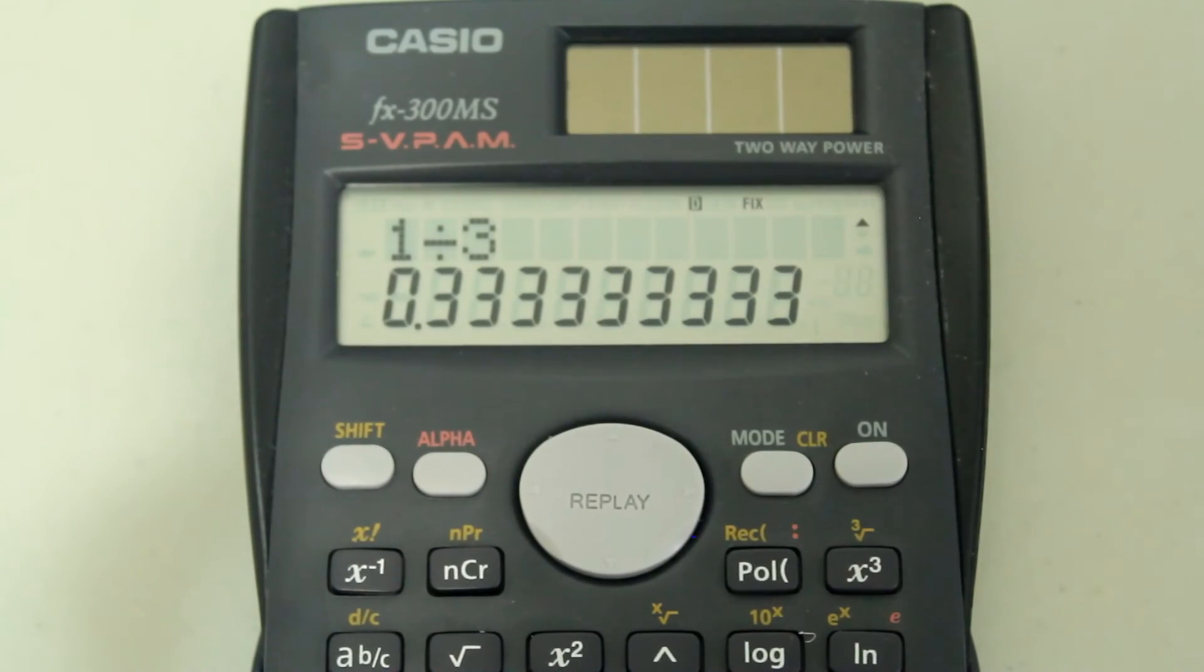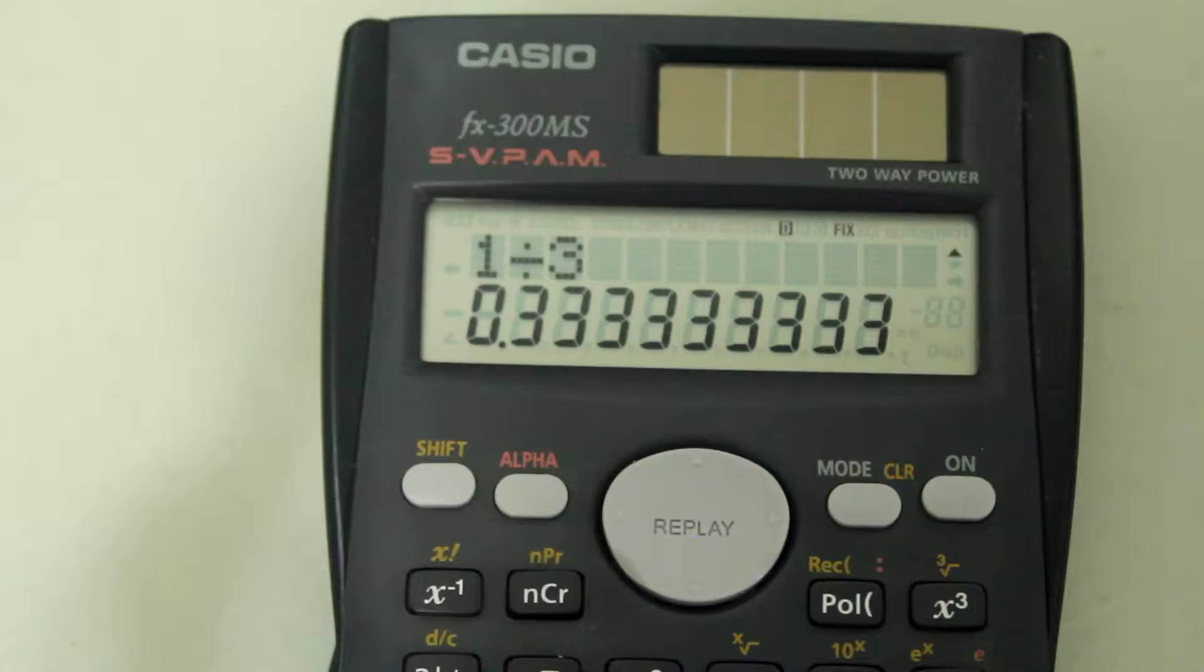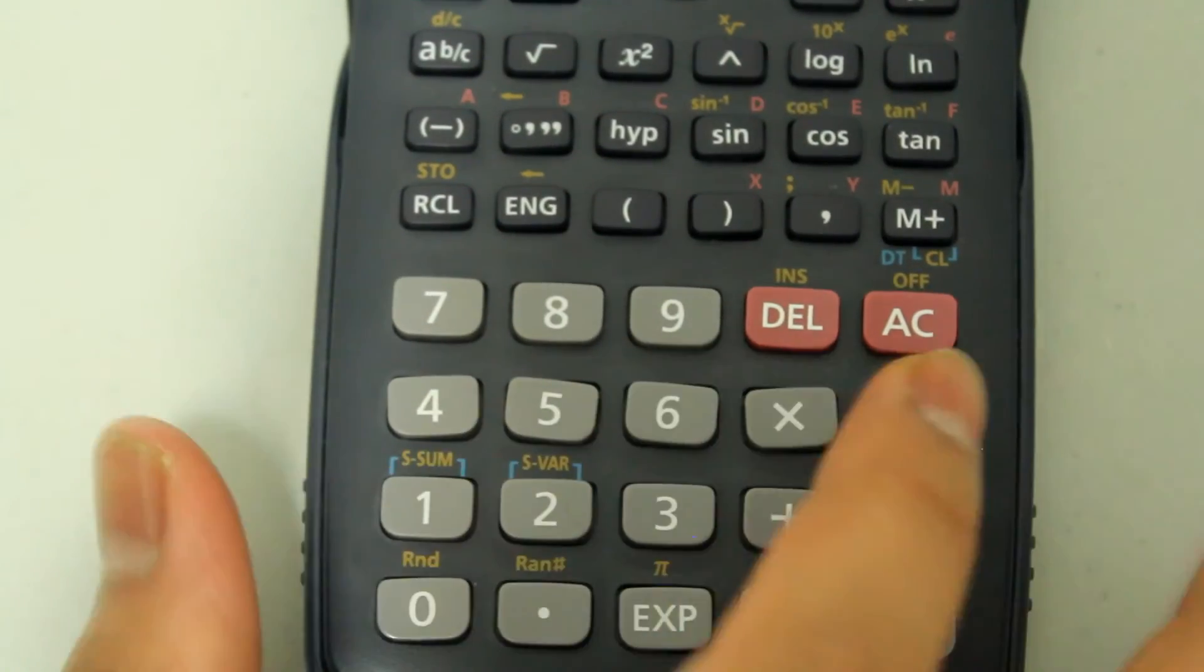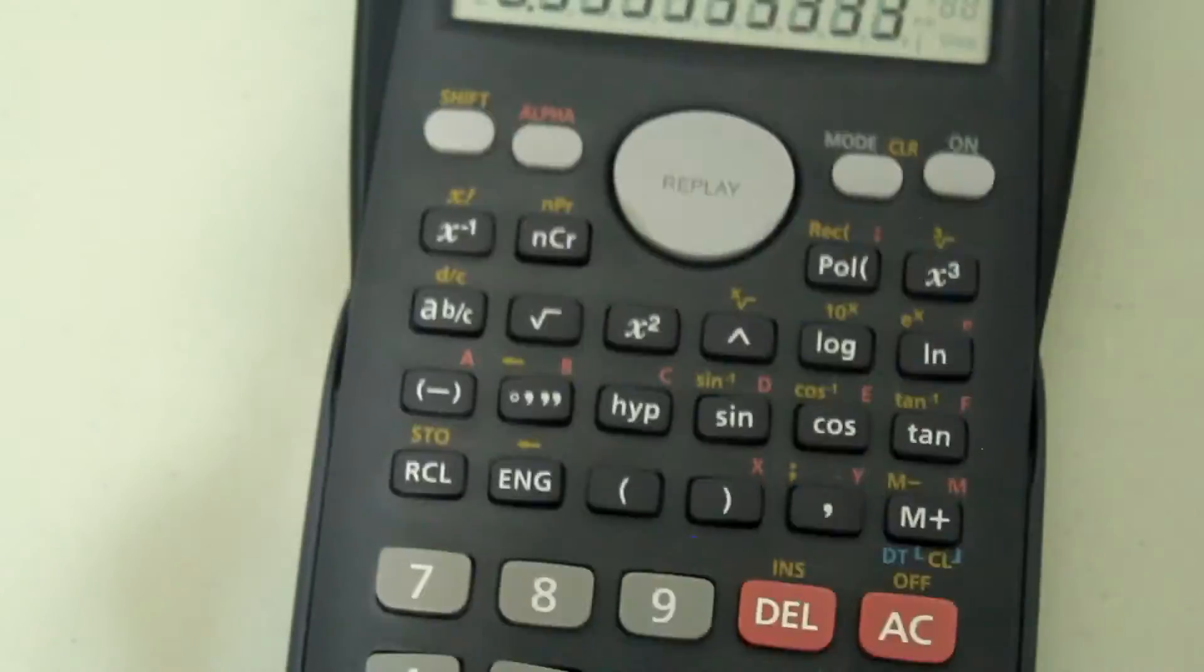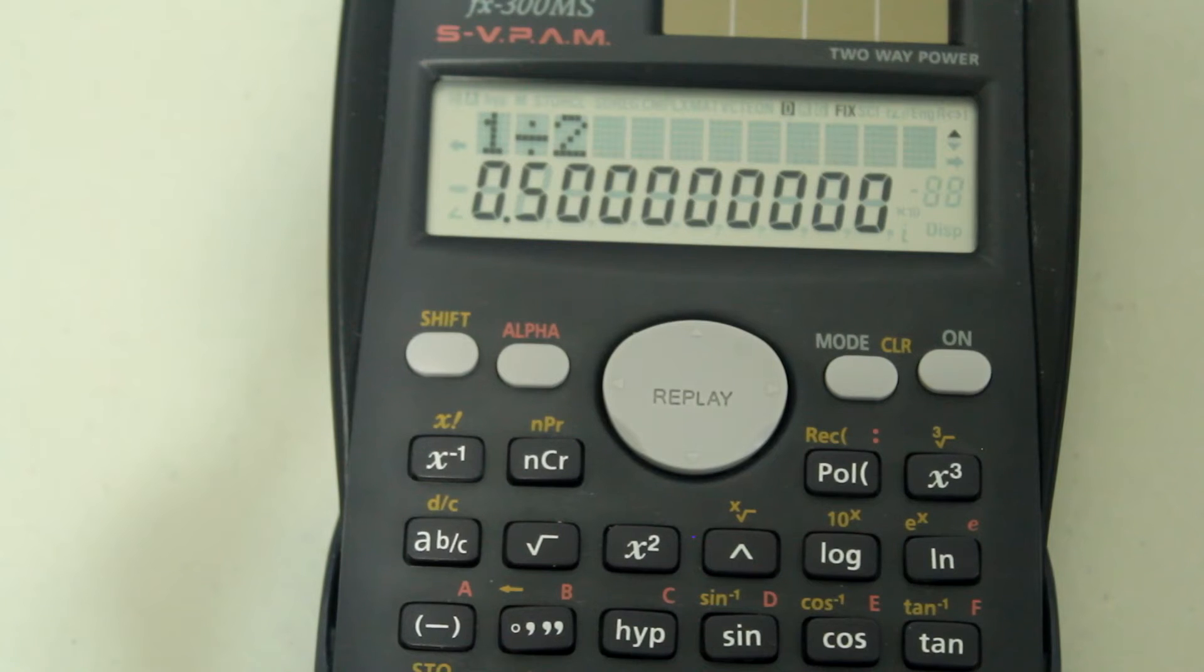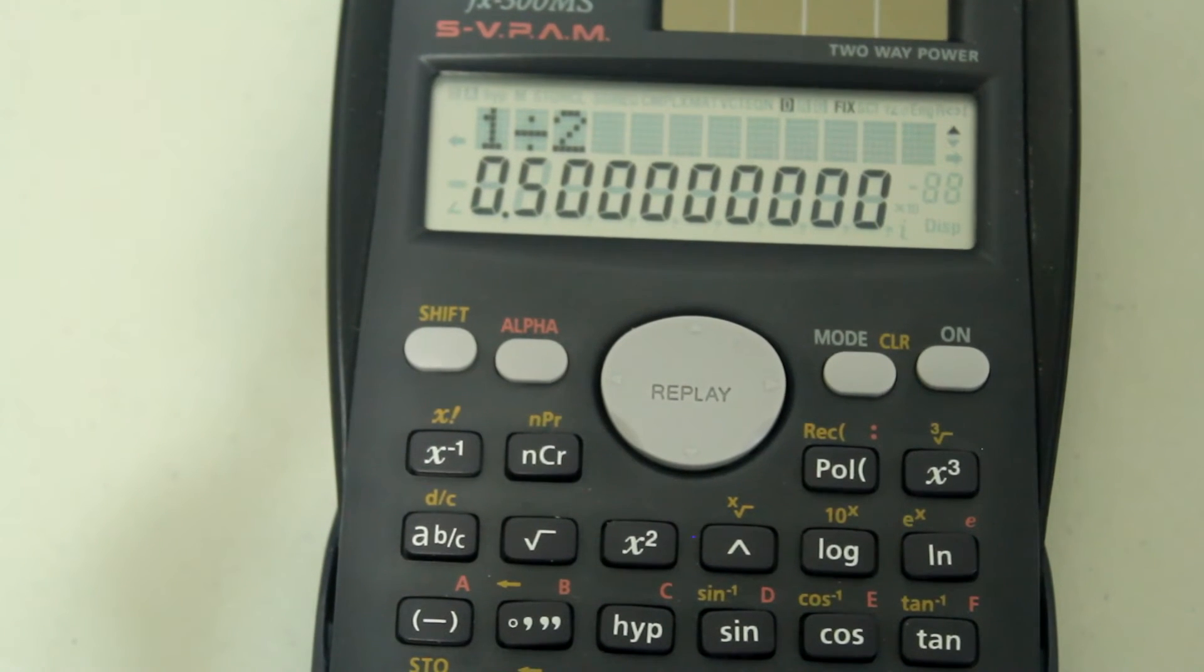Now you see that 1 divided by 3 is shown as 0.3 repeated. There is one slight problem with fixing it at 9, however. If you type in something like 1 divided by 2 and hit equals, you still get all the additional decimal places. So it might be a good idea to turn the fix option off altogether.